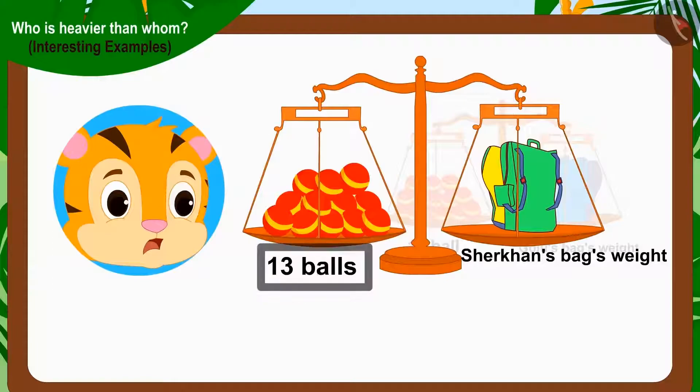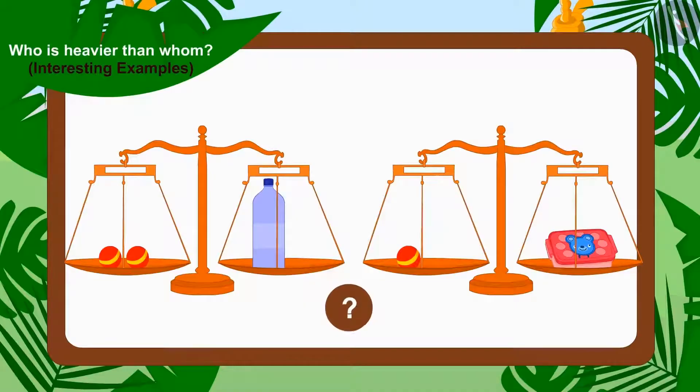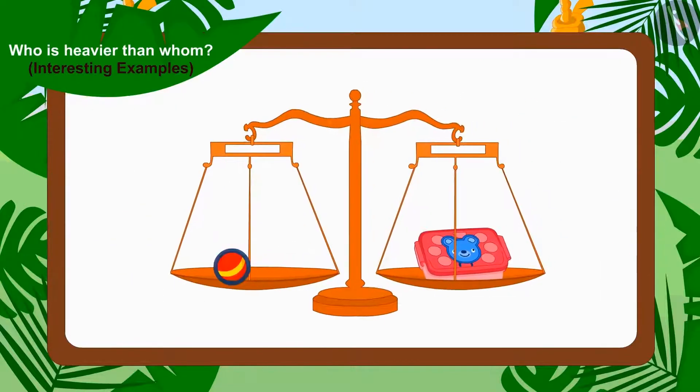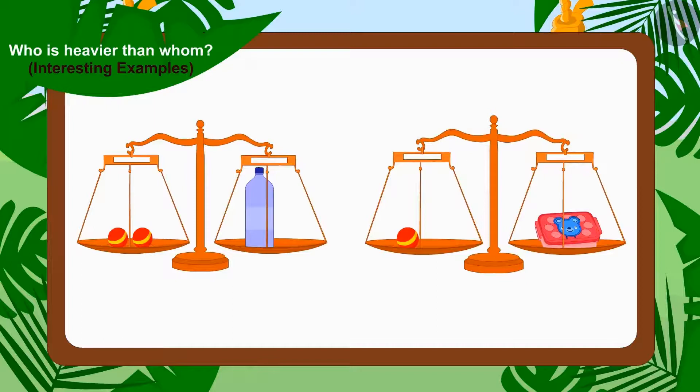Children, can you look at these scales and tell which of these two items is heavier? Yes! The water bottle weighs two balls and the tiffin box weighs one ball. So, the weight of the water bottle is more than the weight of the tiffin box.